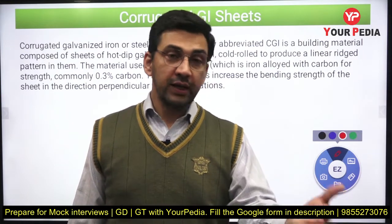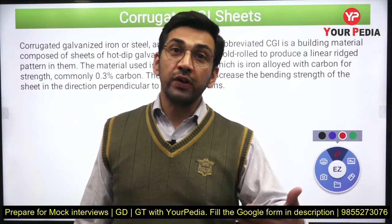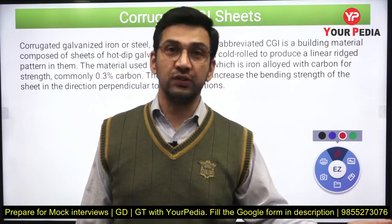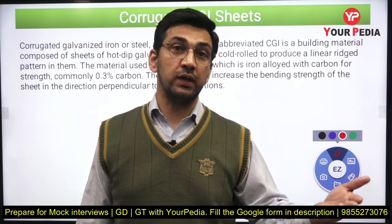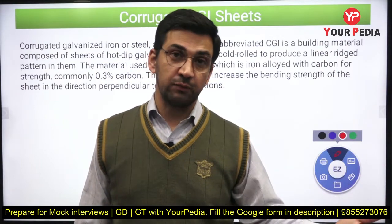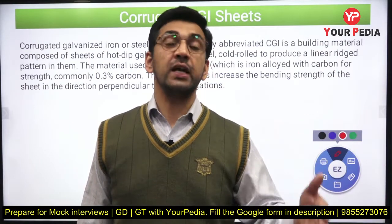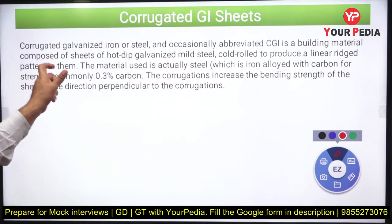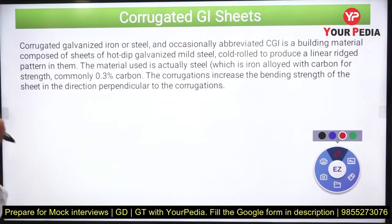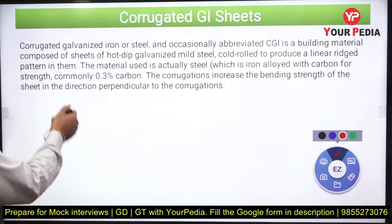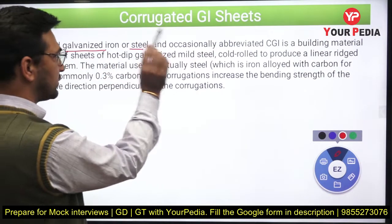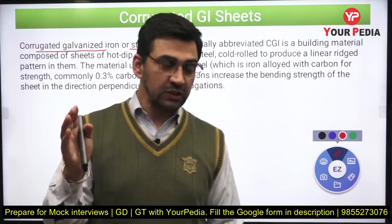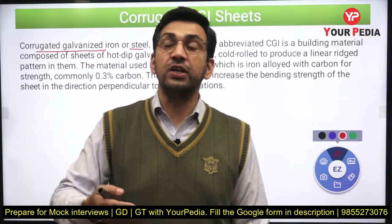The next question that could be asked is how the bending resistance of the corrugated sheet compares to that of the plain sheet — you have to explain this using the concept of strength of materials. I am going to discuss that in the next video. For this question, corrugated galvanized iron — or steel, because it is basically a steel sheet only — is the correct terminology.